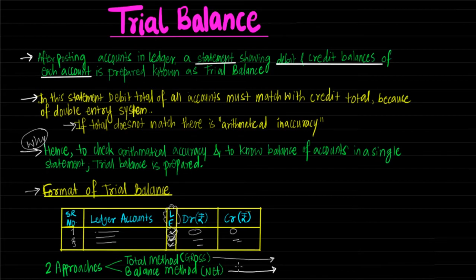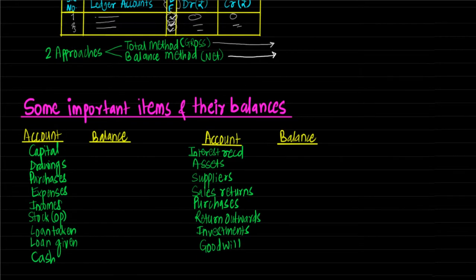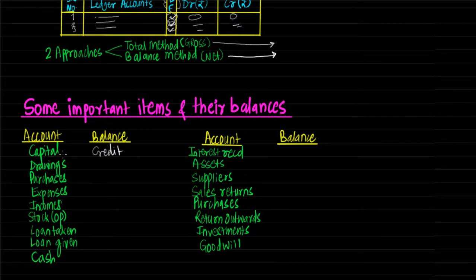The difference between these two approaches will be clear from the example. Before taking an example, we should know what balances are generally shown by certain accounts. We'll go through a list of accounts and their typical balances logically, by first thinking about the type of account and the major transactions in that account. The first account is capital account, whose general balance would be credit balance. Capital account is a personal account — the proprietor's account — and capital is money introduced by the proprietor into the business, so it is credited by the rule 'credit the giver.'